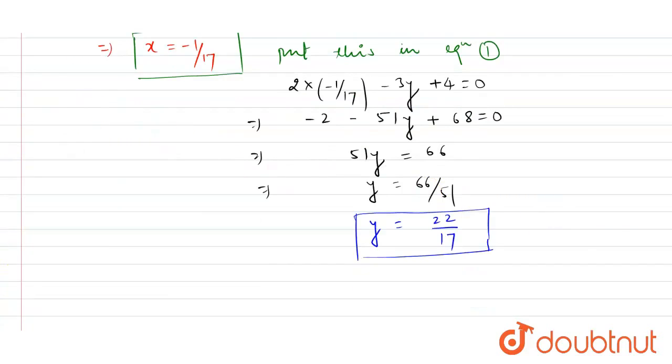So therefore students, as you know, the coordinates of the center of circle we generally consider as h, k and this is nothing but -1/17, 22/17.